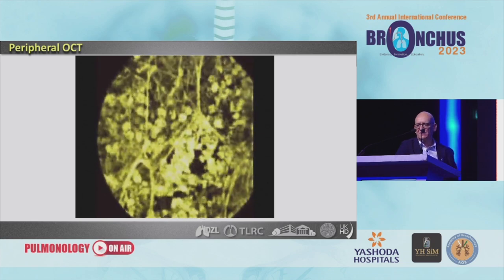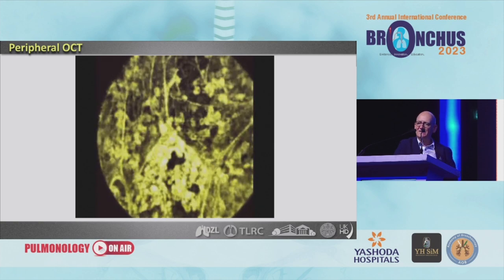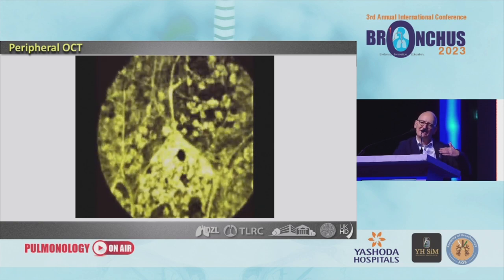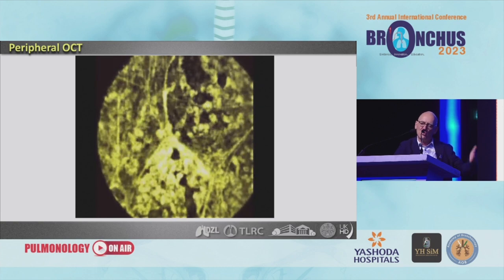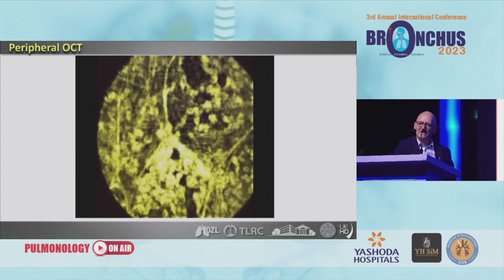You see the filling of the alveolar space in a patient suffering from exogenous allergic alveolitis. Maybe we are able to realize earlier, with the help of the scope, if the patient is responding to one of the drugs used in the various options of interstitial lung disease. These techniques are nowadays available and under evaluation for whether you really get additional information using the smaller OCT probes in the peripheral part.